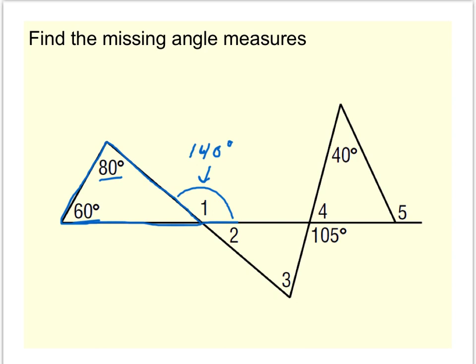Angle 2 forms a linear pair with angle 1, and so that means angle 2 must be equal to 40 degrees, since 140 plus 40 adds up to 180 degrees.